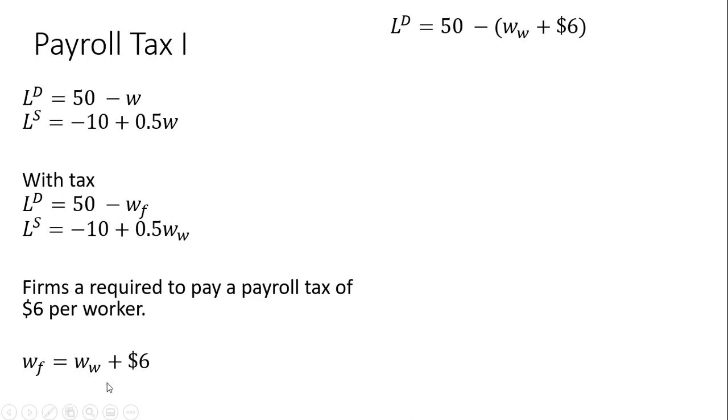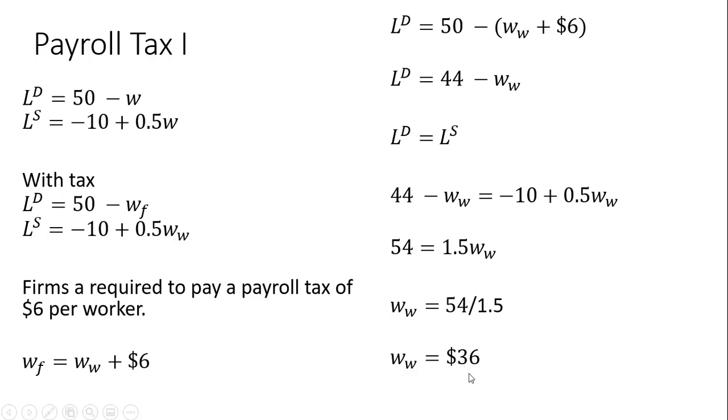I'm going to take this wage of workers plus $6 and plug it into the labor demand equation. Where I have w subscript f, what is that when we have taxes? It's the wage of workers plus the tax. Then simplify. We got minus $6 and $50 is $44, just minus the wage of workers. Now set this equal to the labor supply equation. We'll have one equation and one unknown. Adding 10 to both sides and adding the wage of workers to both sides and dividing through by 1.5, the wages of workers will be $36.